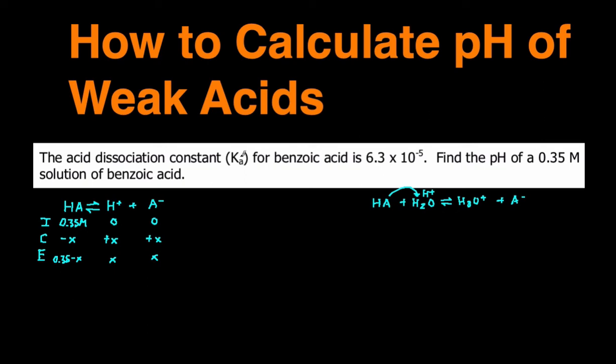The next thing we do is set up the Ka expression. Ka is the acid dissociation constant. For all Ks, there's always just going to be concentration of products divided by concentration of reactants. So this could be Ka equals the concentration of H plus times the concentration of A minus divided by the concentration of the reactant, which is HA.